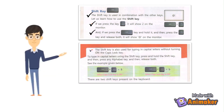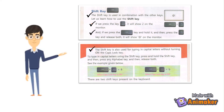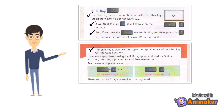The Shift Key is also used for typing in capital letters without turning on the Caps Lock Key. To type in capital letters using the Shift Key, press and hold the Shift Key, then press any alphabet key, and then release both. See the example given below. There are 2 Shift keys present on the keyboard.